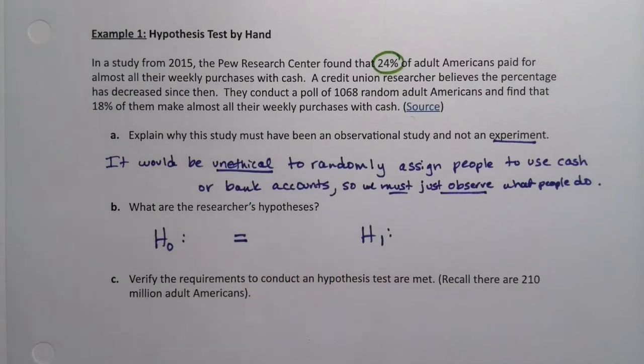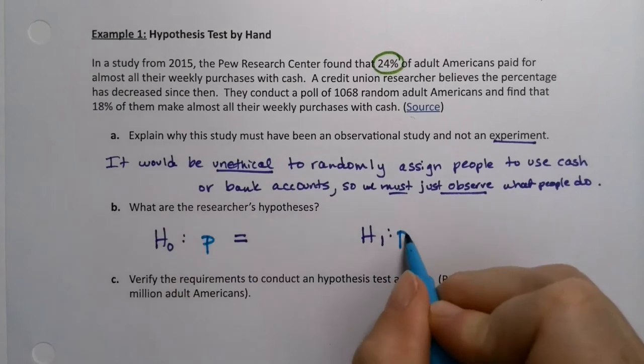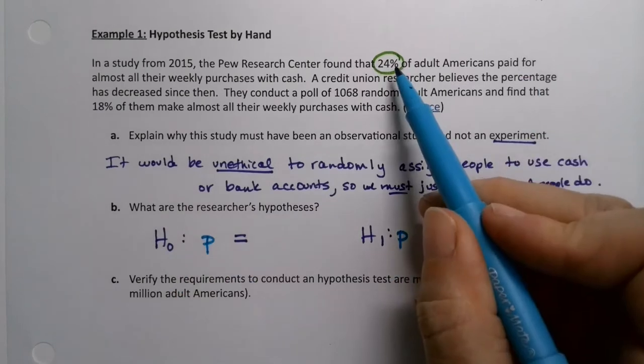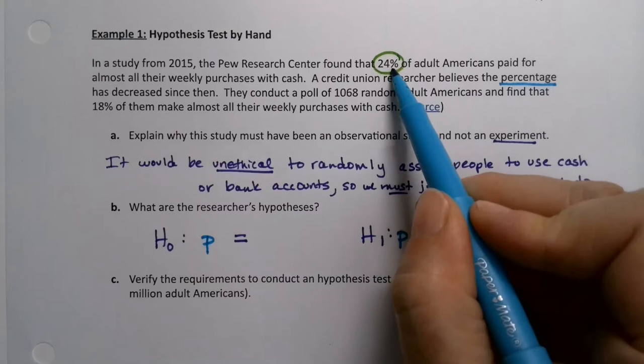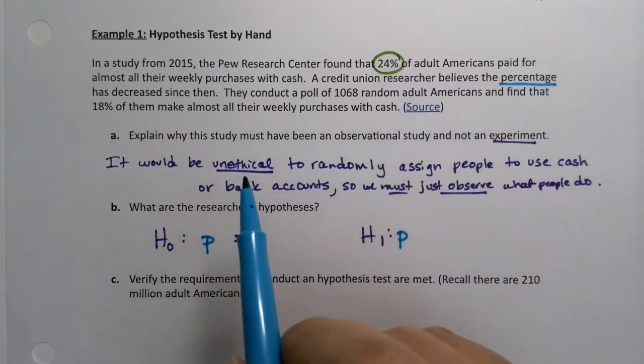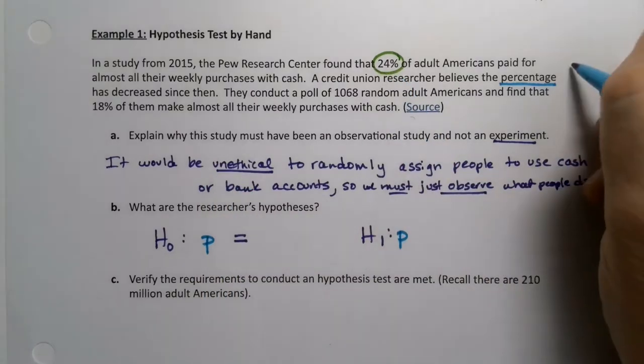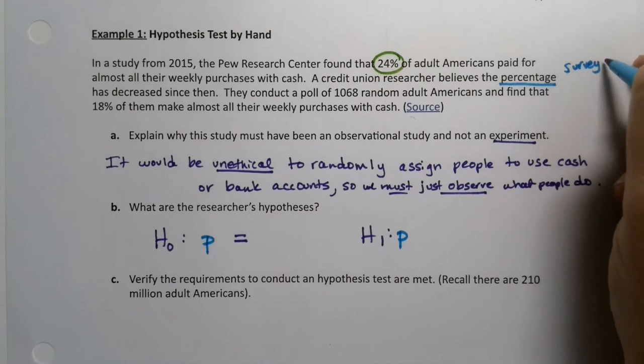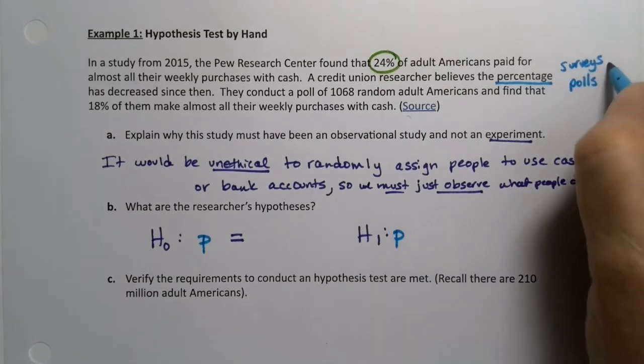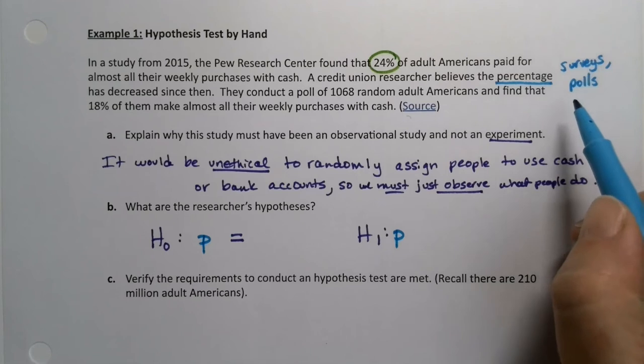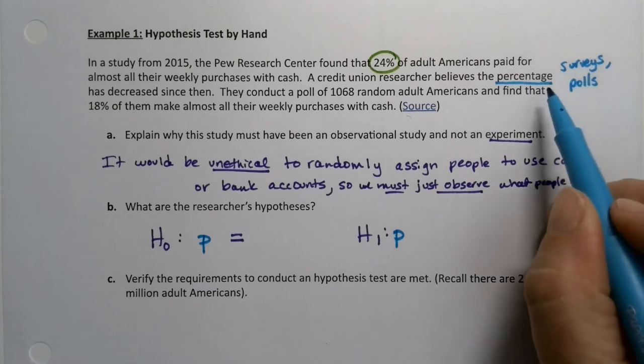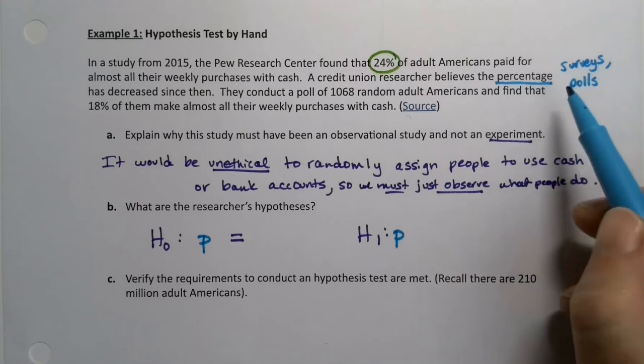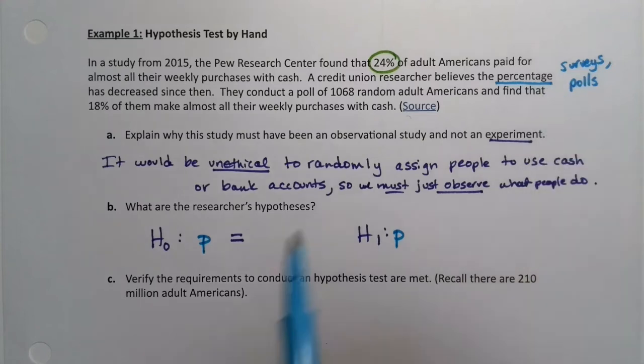Surveys are always proportions. So we can tell it's a P here and a P here. For one thing, I see a percent in there. I see the word percentage here. I see a percent right there. And surveys and polls are always P. Well, not almost, almost always P, unless they're asking for a value from people. But if they're just saying, hey, do you use cash or not? Yes or no. That would be turned into a poll, right? That would be turned into a percent. So that's a proportion.